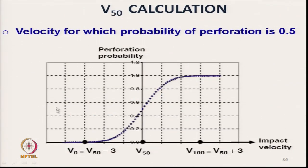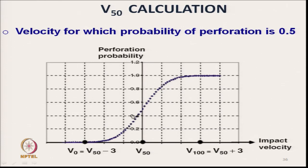This is the velocity-probability curve: as velocity increases from zero, probability of penetration increases. At velocity V100 there is 100 percent penetration. Plotting velocity versus probability of perforation gives this type of curve, and the velocity where probability is 50 percent is known as V50. The diagram also shows different shot positions used for V50 calculation on the armour panel.